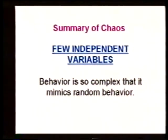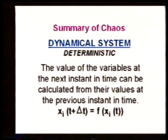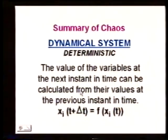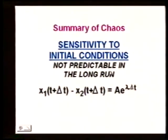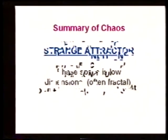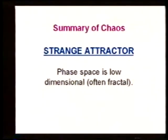In summary: chaos means we have a few independent variables, but the behavior of those variables is so complex that it mimics random behavior. A chaotic system is a dynamical system—which means it's deterministic—meaning the values of the variables at the next instant in time can be calculated from their values at the previous instant, either from a difference equation if it's a map, or from a differential equation if it's smooth. And we have sensitivity to initial conditions so that over the long run things are not predictable, even though they're deterministic. In the phase space, we have an attractor that's low-dimensional and typically fractal.